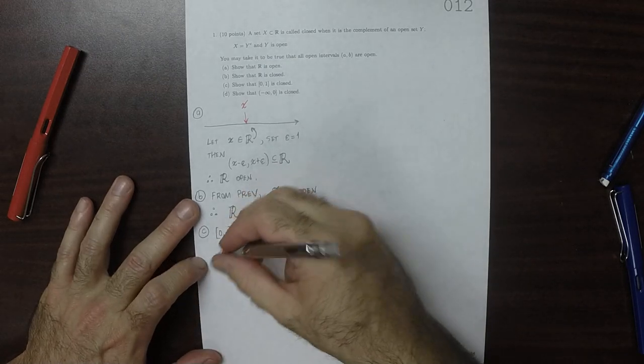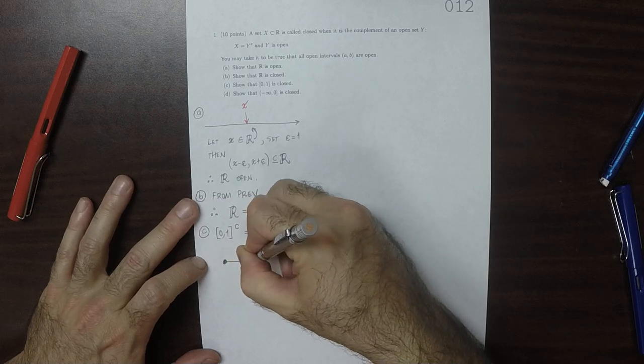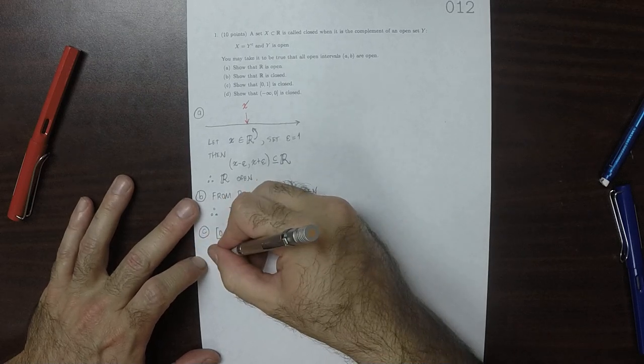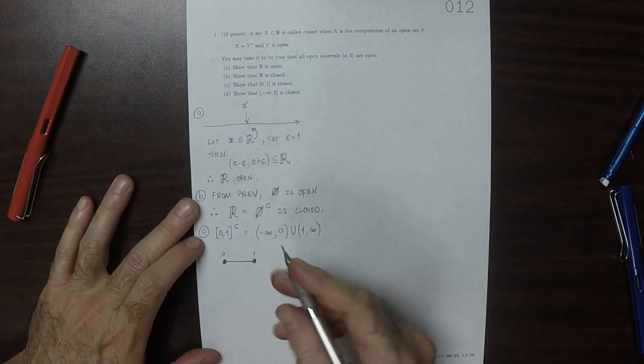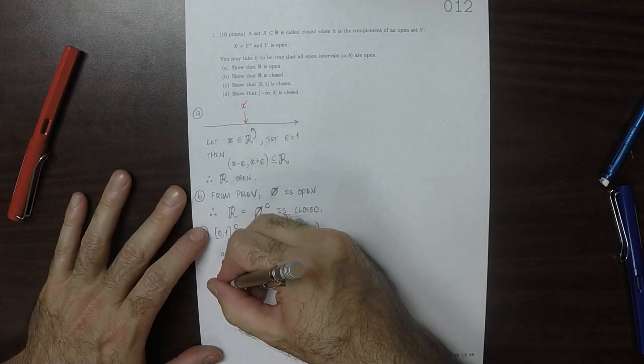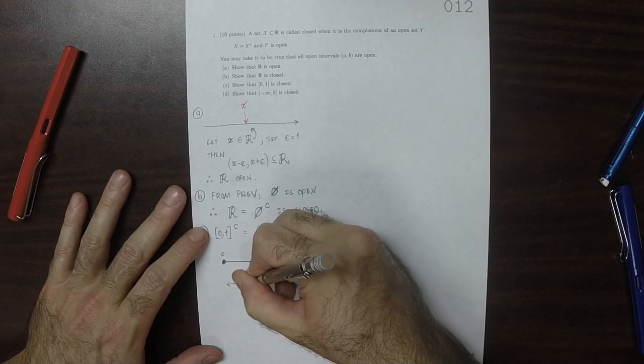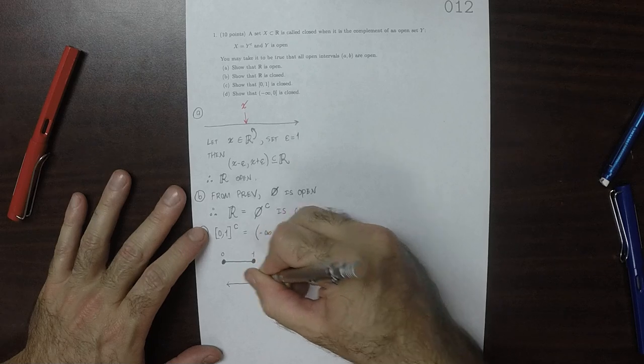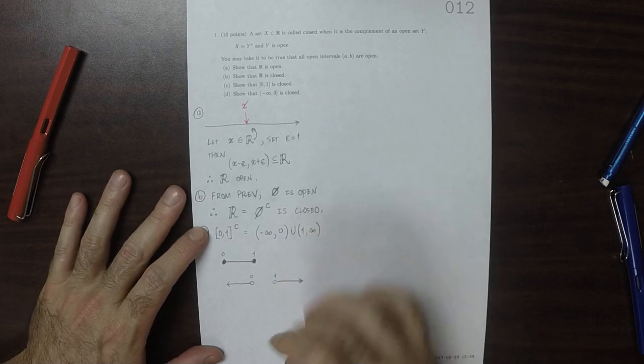Which is just to say that here's 0 to 1, both endpoints included. And then the complement of that is, of course, 0 to 1, like this. So that's the complement.